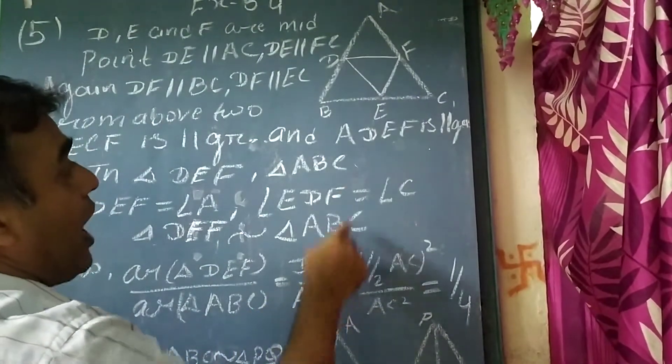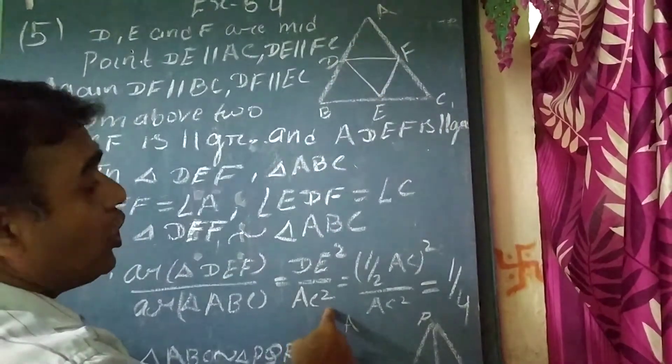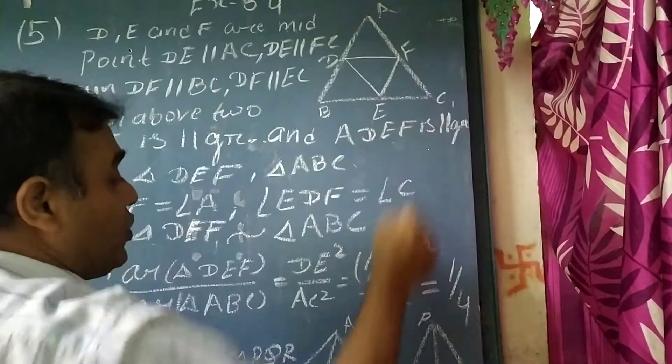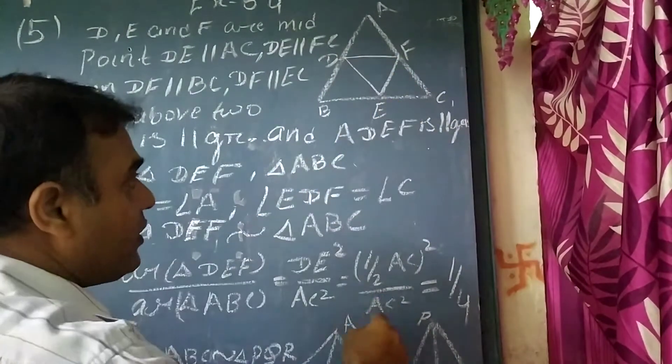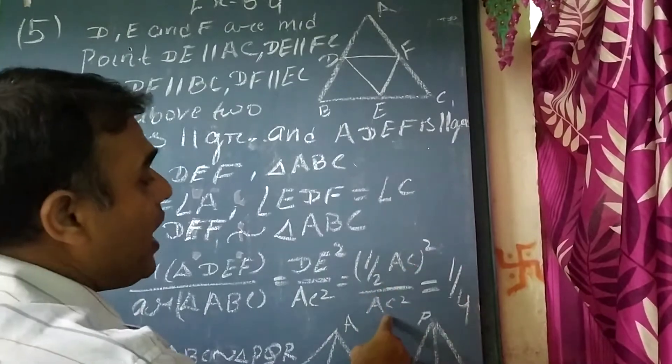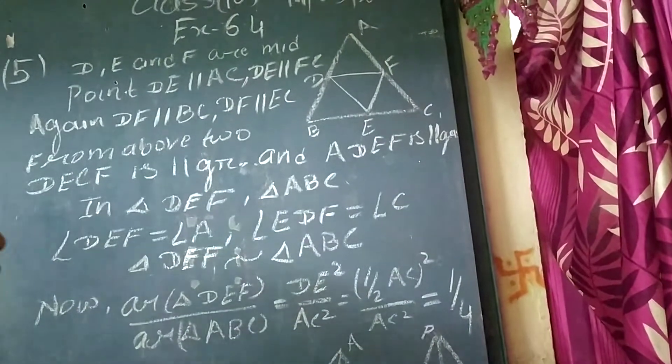So AC square, we can write 1 by 2 as this is the midpoint of the triangle. We can write AC square by AC square, so we will get 1 by 4. In this way we have solved question number 5.